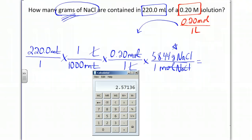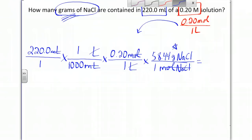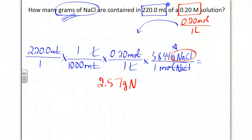That gives us 2.57, and because grams of NaCl is all that's left standing, that is the unit of our final answer.